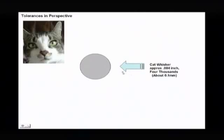Trying to put it in perspective - we got my sister's cat out here and measured his whisker. We found out that whisker was about four thousandths of an inch. Four thousandths of an inch is about equal to 0.1 millimeters, and that's the conversion I do when we go back from metric to inch.